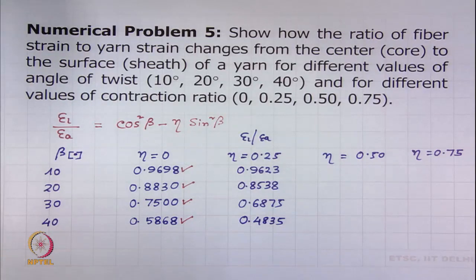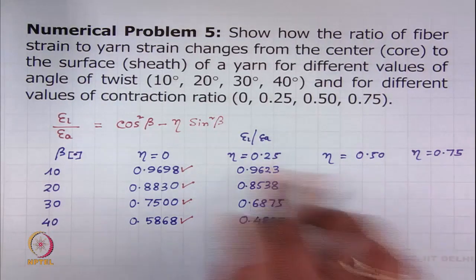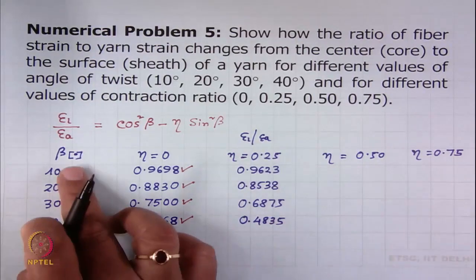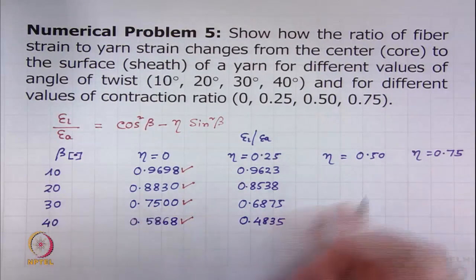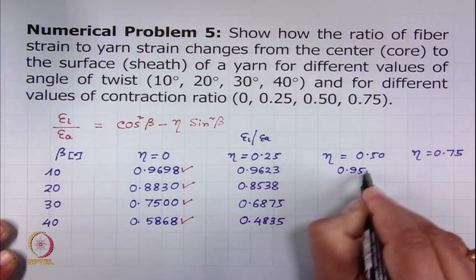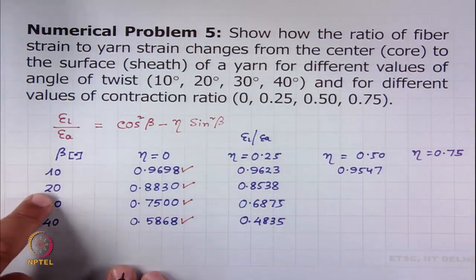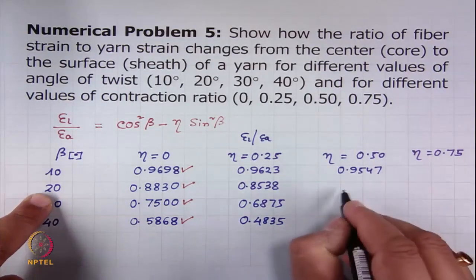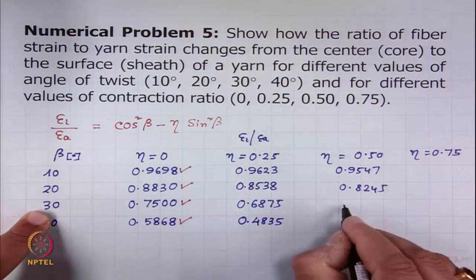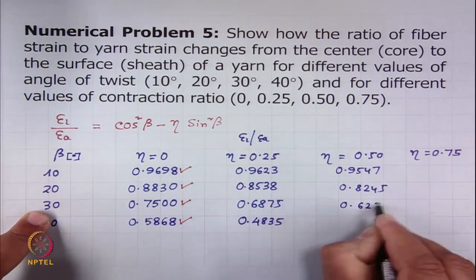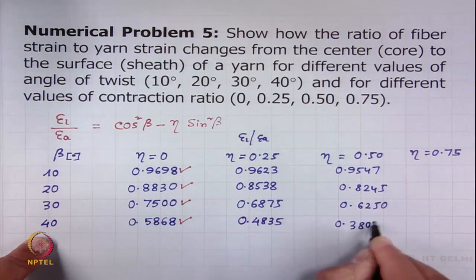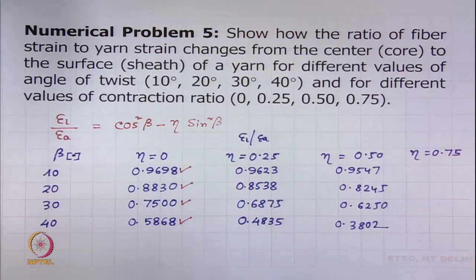In a similar manner we can solve the ratio when contraction ratio is 0.5 for four different angles of beta. The answer for 10 degrees will be 0.9547, then for 20 degree beta the answer will be 0.8245. For 30 degrees the answer will be 0.6250 and for 40 degrees the answer will be 0.3802.